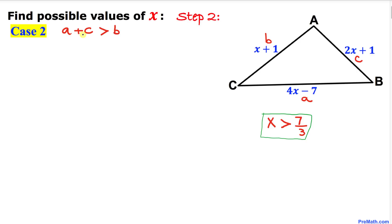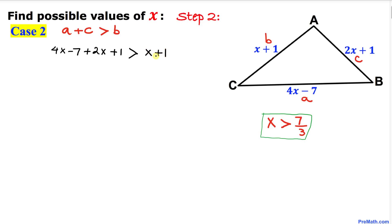Here is Case 2: a plus c is greater than b. Let's fill in the blanks — in our case a is 4x minus 7, c is 2x plus 1, and this must be greater than b, which is x plus 1.